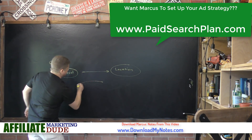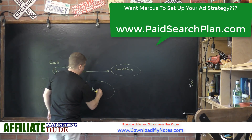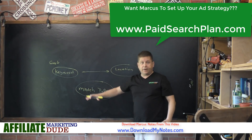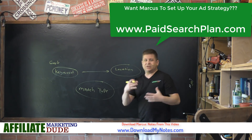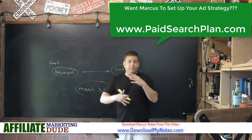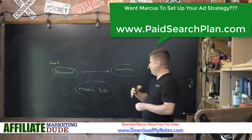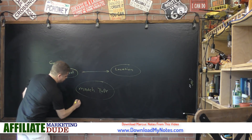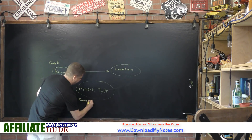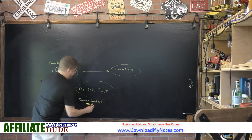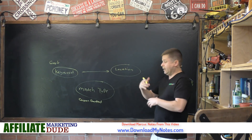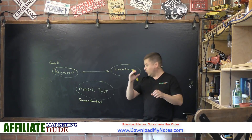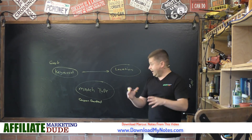Then we have what's called match type, which is very important. Match type determines how you want your keyword to trigger the ad. If you bid on something broad like the word 'coupon,' we don't know what people want. With broad match — say 'coupon download' — that would trigger anything containing both words in any order: 'coupon download,' 'download coupon,' 'how to download coupon,' 'coupons for download' — anything that has both words in it.